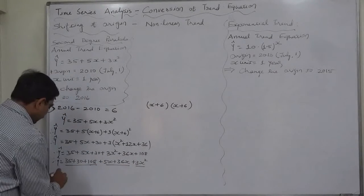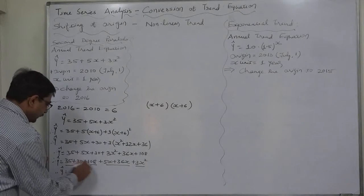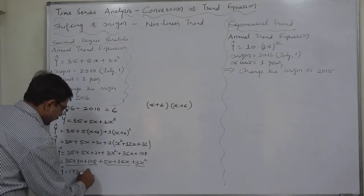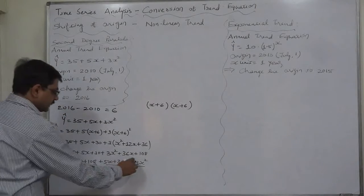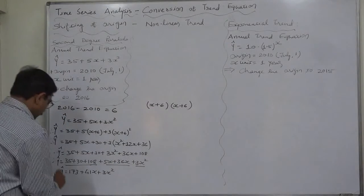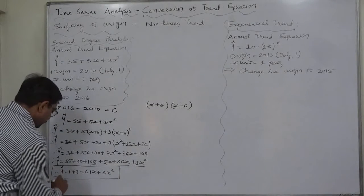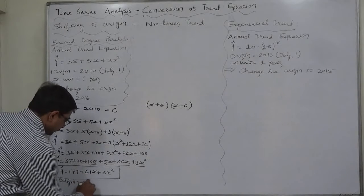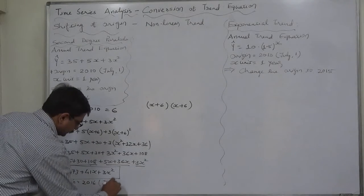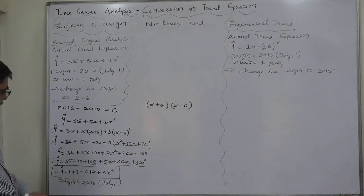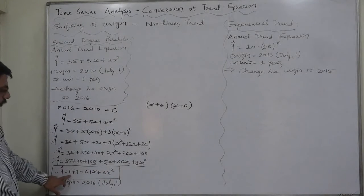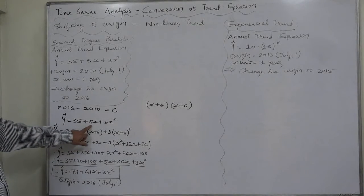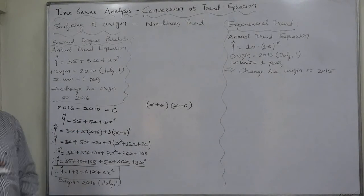So y estimated will be 173 plus 41x plus 3x square with origin 2016. So in this case there is change in constant A and the value of B. That's it. Thank you very much.